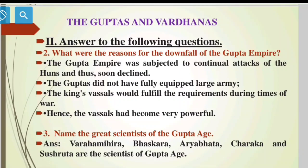Now, main answer questions. What were the reasons for the downfall of the Gupta Empire? The Gupta Empire was subjected to continual attacks of the Huns and thus soon declined. The Guptas did not have a fully equipped large army. The king's vassals — provincial and local kings — would fulfill requirements during times of war, and hence the vassals had become very powerful. So the downfall of the Gupta Empire starts from there.